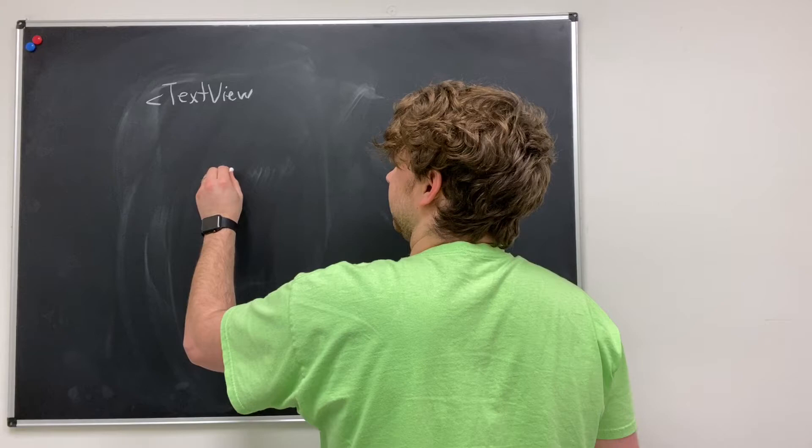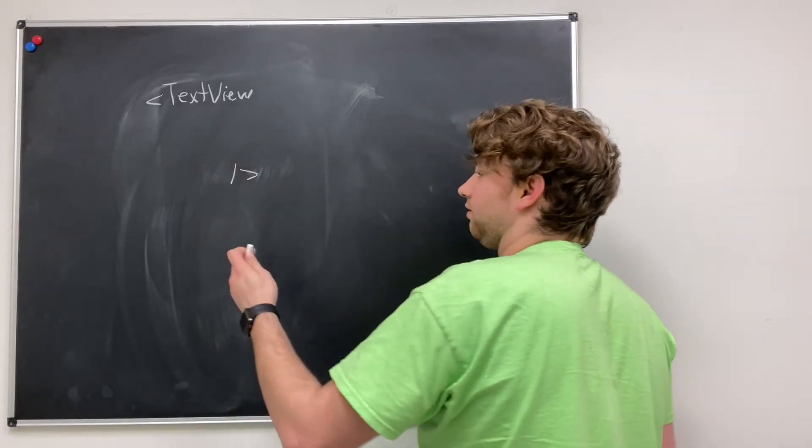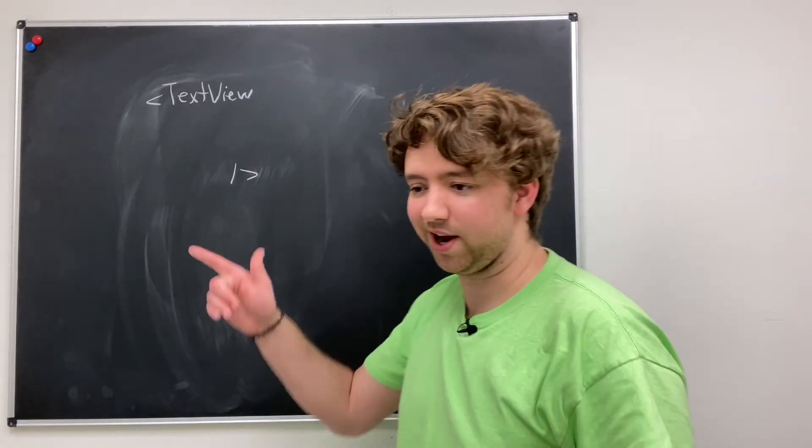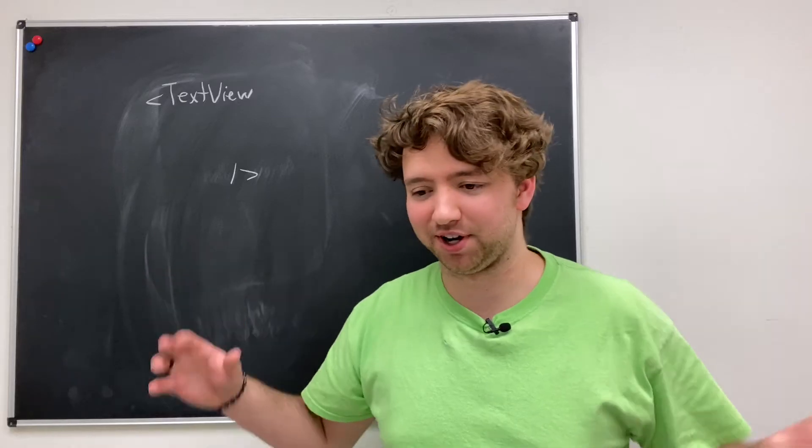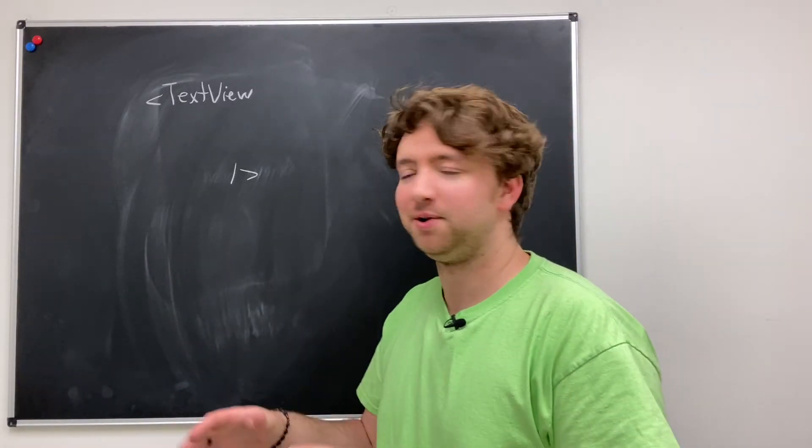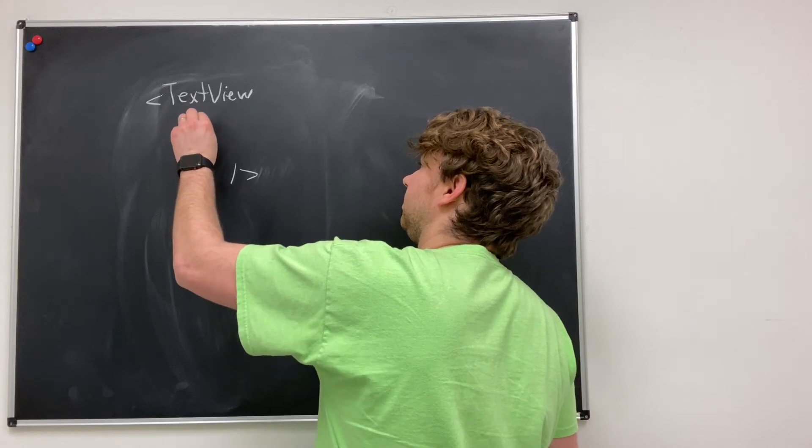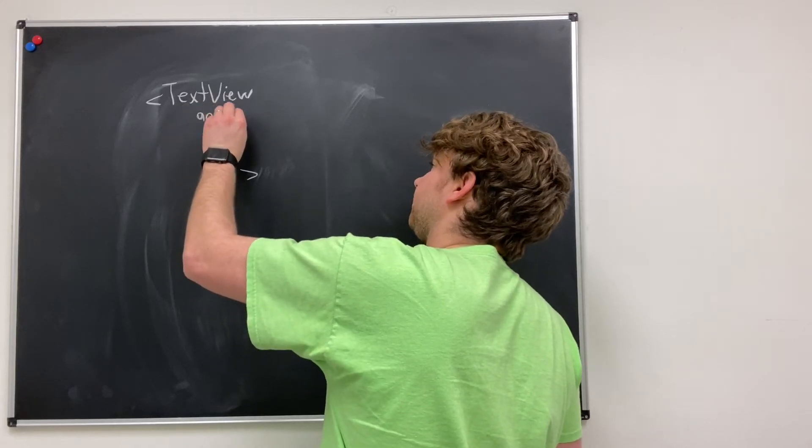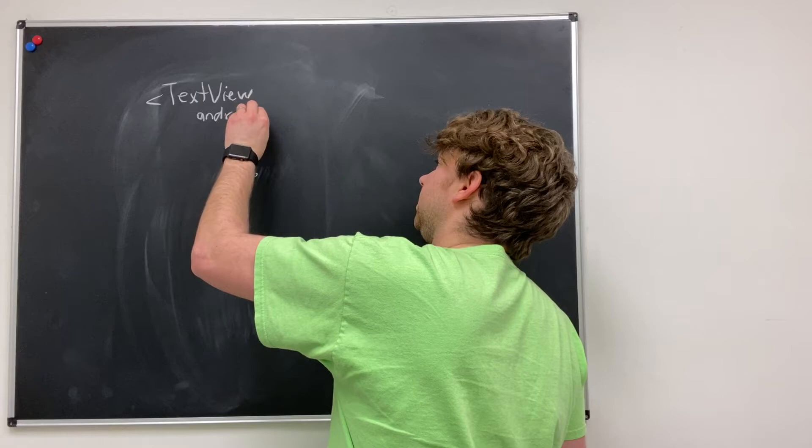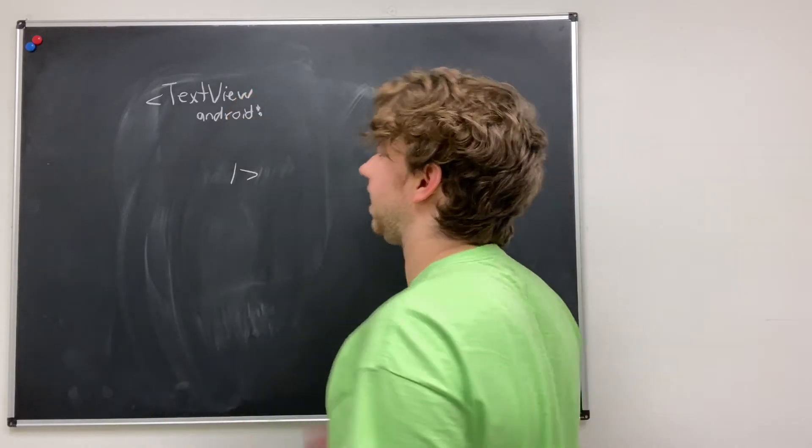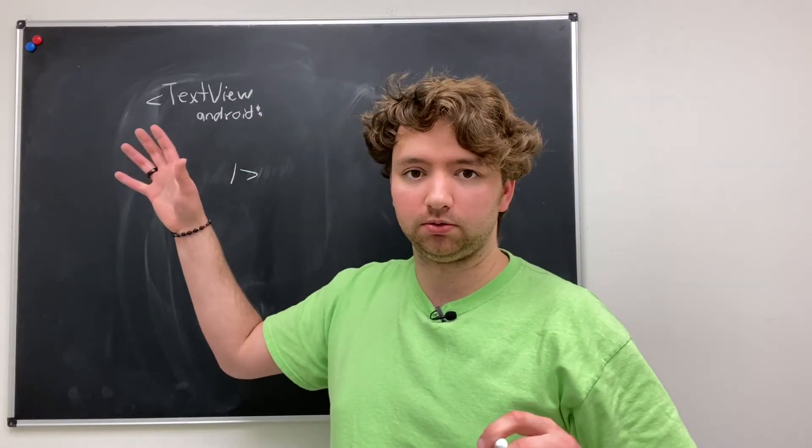We have a TextView. And then we have some stuff inside, and then we eventually close it using a forward slash and a greater than sign. And I always forget which one, I always have to do the alligator thing or whatever. And then inside of here, you're going to see something like this. So Android, and then a colon, and then it'll have some attribute or property.